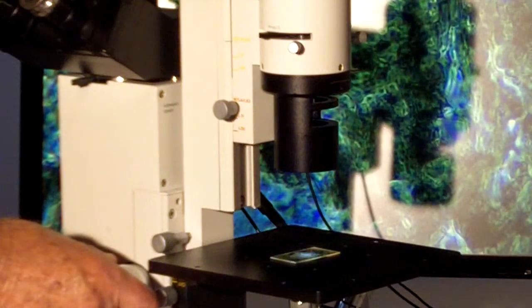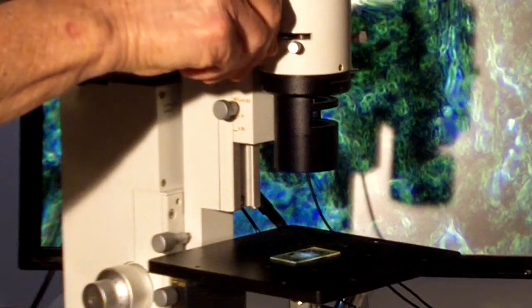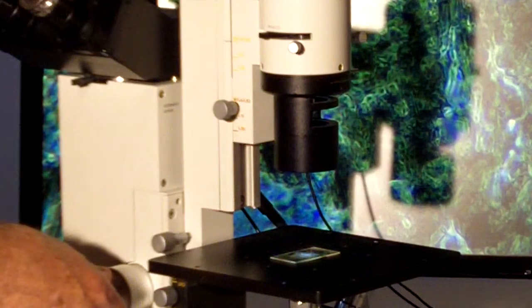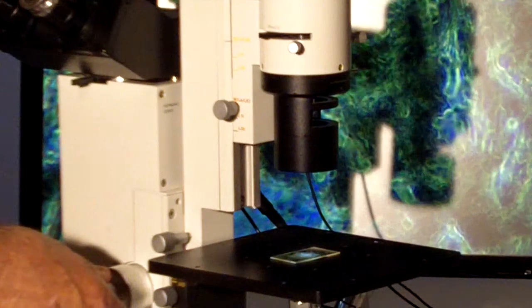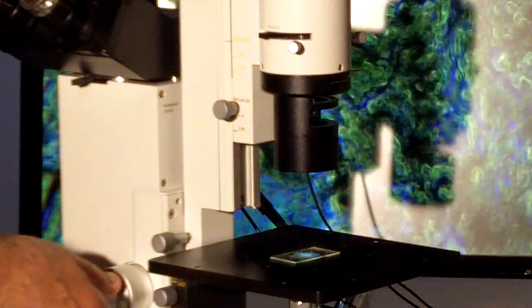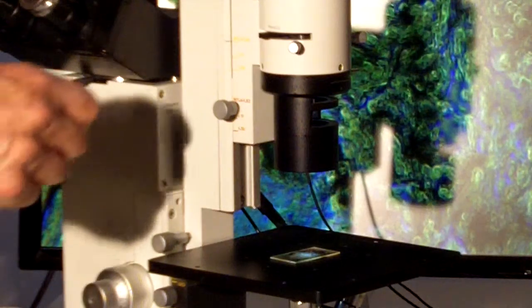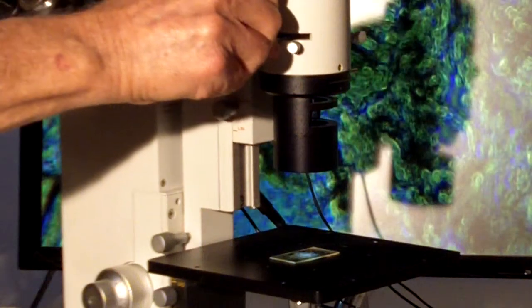Here it is in just phase contrast. We can look at mineral sections and fibers in phase. This is a method they might use looking at trace evidence in a forensic crime laboratory. Let's remove the phase ring at this point and look at it just in bright field.